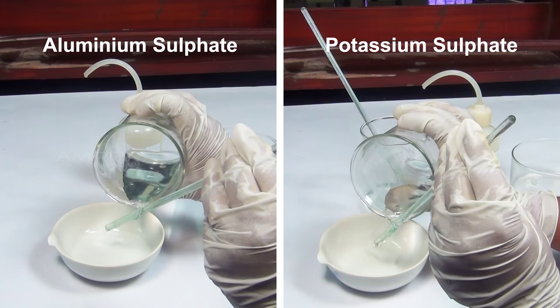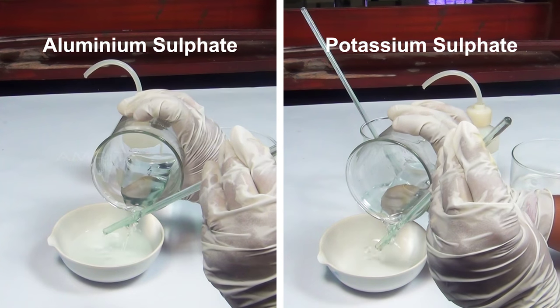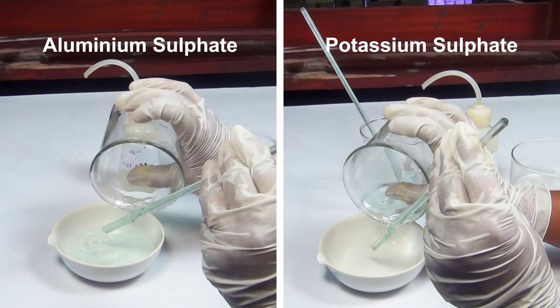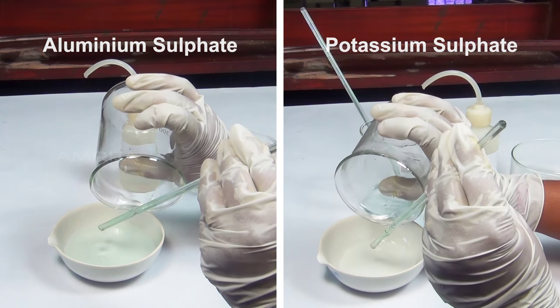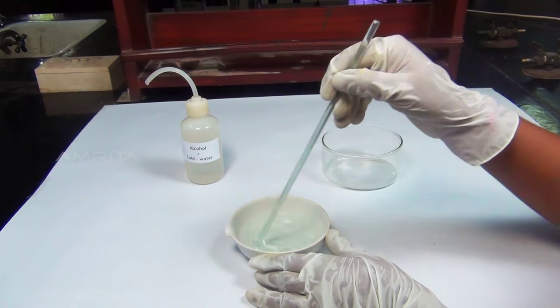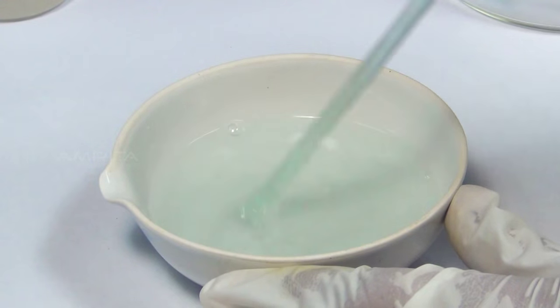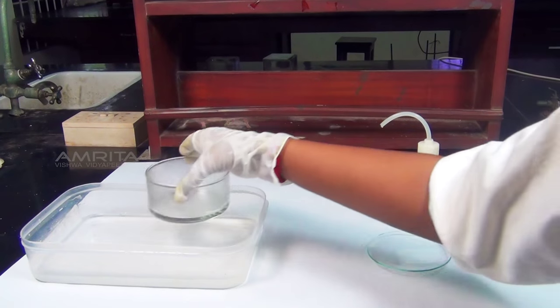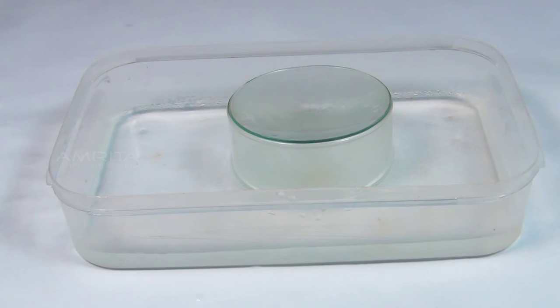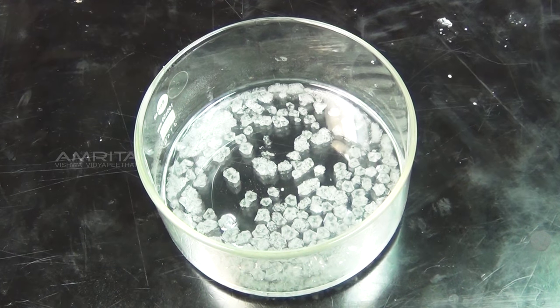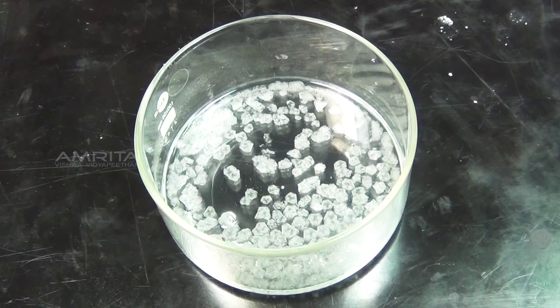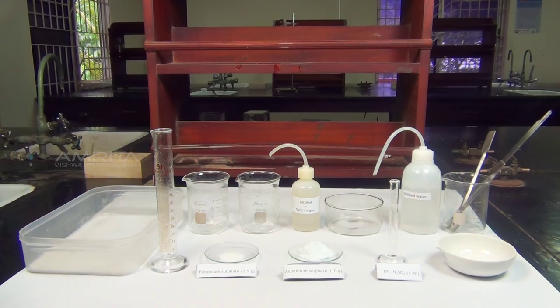It is prepared by dissolving an equimolar mixture of hydrated aluminium sulphate and potassium sulphate in a minimum amount of water containing a little sulphuric acid. The resulting solution is subjected to crystallisation, and octahedral crystals of potash alum separate out. Our aim here is to prepare a pure sample of potash alum.